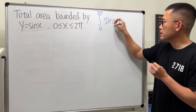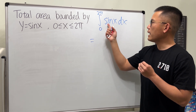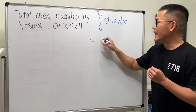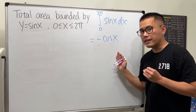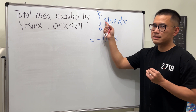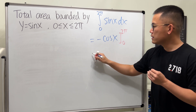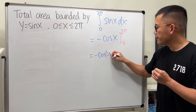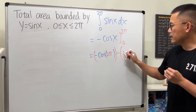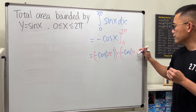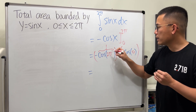The function is sin(x). The derivative of negative cos(x) is positive sin(x), because the derivative of cos(x) is negative sin(x) — we need another negative to end up with positive sin(x). We plug in the bounds: first negative cos(2π), then minus negative cos(0).